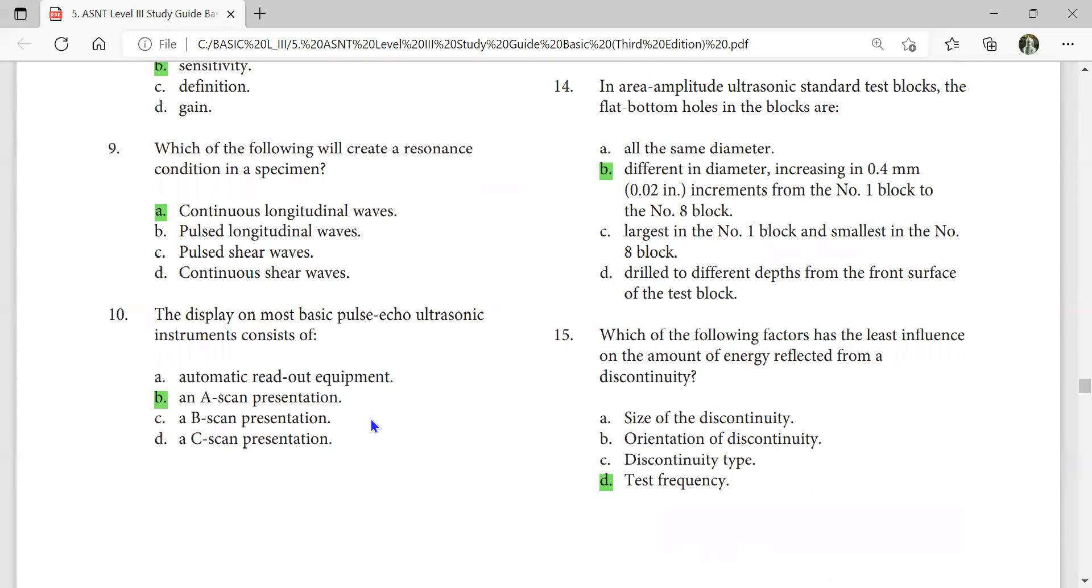Which of the following factors has the least influence on the amount of energy reflected from a discontinuity? The test frequency. The size of discontinuity, orientation of discontinuity, and discontinuity type all have more influence. Test frequency has the least influence on the amount of energy reflected from a discontinuity.